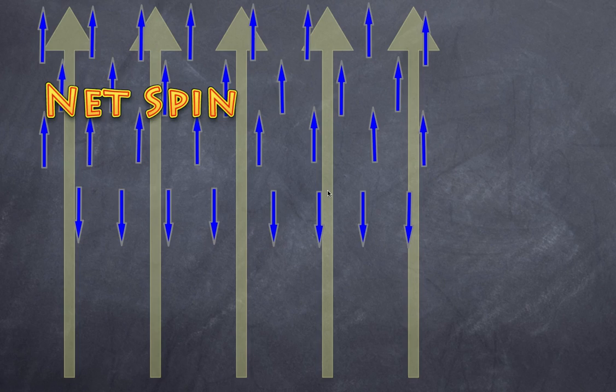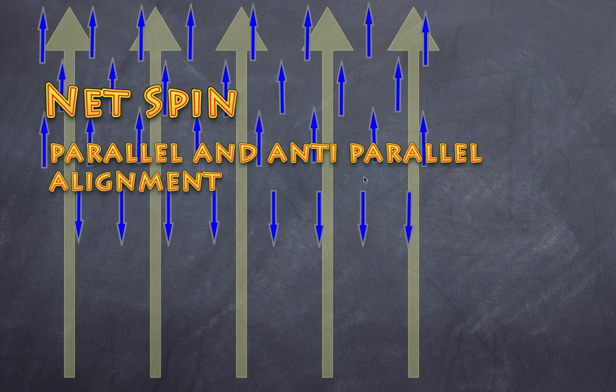We're going to concentrate of course on hydrogen nuclei because they are the most abundant atom in our bodies. When you place those spinning nuclei in a strong magnetic field, they align either parallel or anti-parallel. Most align in a parallel direction and only a few align anti-parallel. The proportion is determined by the strength of the magnetic field.